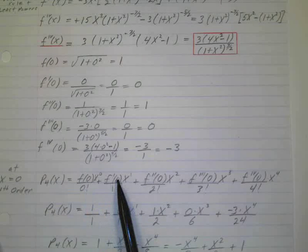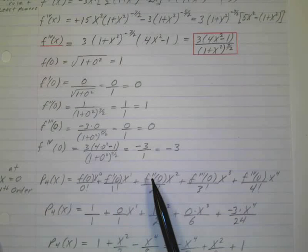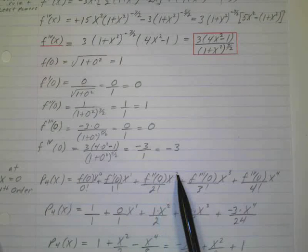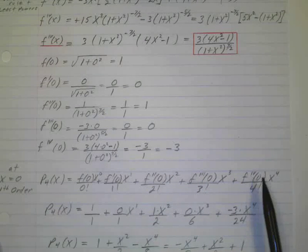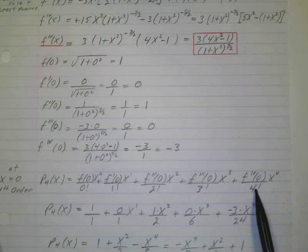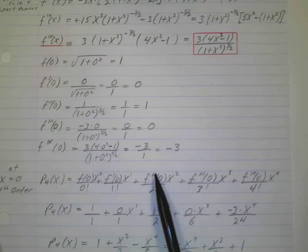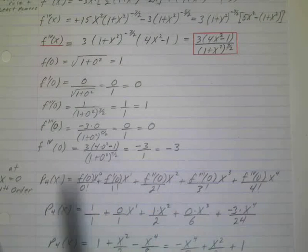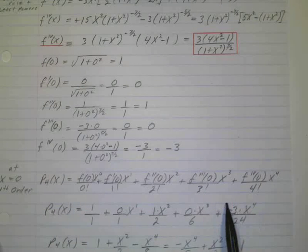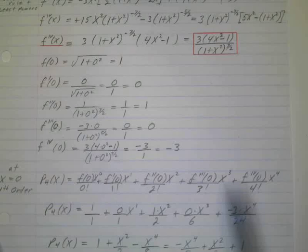Then f prime of zero times x to the one over one factorial, f double prime at zero times x squared over two factorial, triple prime of zero times x cubed over three factorial, and the fourth derivative at zero times x to the fourth over four factorial. You can see all these fours match up, the threes match up, the twos match up, the ones match up, and the zeros match up — the x exponent and the factorial are always the same.